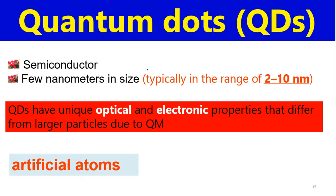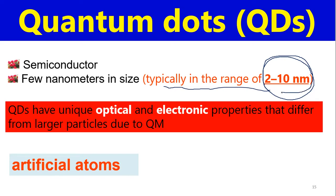What is the specialty of a quantum dot? It is very, very small in size. If you synthesize nanoparticles or any kind of material which has a size between 2 and 10 nanometers, you can give it the name 'quantum dot.' 'Dot' simply means dot — it's very small, it looks like a dot. 'Quantum' relates to quantum mechanics. When we decrease the size of a material, we get some extraordinary properties — the properties change tremendously.